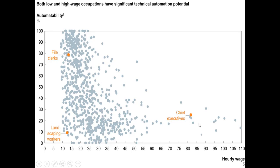Over here on the chart, you see something like a chief executive. They're not quite as able to be automated, but they're not out of the woods either. It's probably around 27-28% of what they do that could be automated. So maybe you pay them less as a result, because you don't need as many.